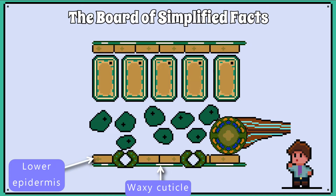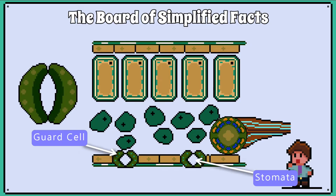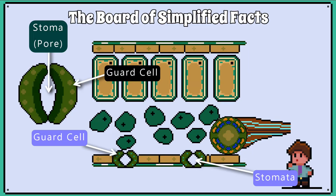Below the spongy mesophyll layer is the lower epidermis and a waxy cuticle. But notice it has gaps. These gaps are called stomata, which includes a pore called stoma and two cells encircling the stoma called guard cells.